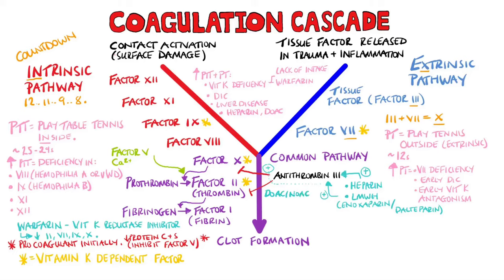The direct oral anticoagulants, DOACs — sometimes called NOACs — work by directly binding thrombin or activated factor X. Rivaroxaban and apixaban are examples of direct activated factor X inhibitors, while argatroban and dabigatran are examples of direct thrombin inhibitors. You can see this difference in the name — rivaroxaban, for example, features 'factor Xa ban' in the name.